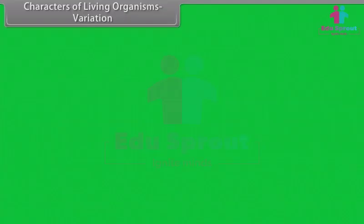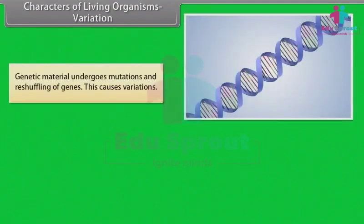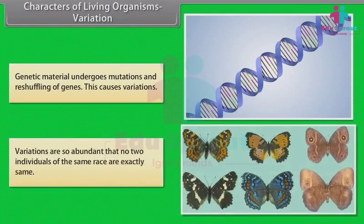Variation: Genetic material undergoes mutations and reshuffling of genes. This causes variations. Variations are so abundant that no two individuals of the same race are exactly the same.